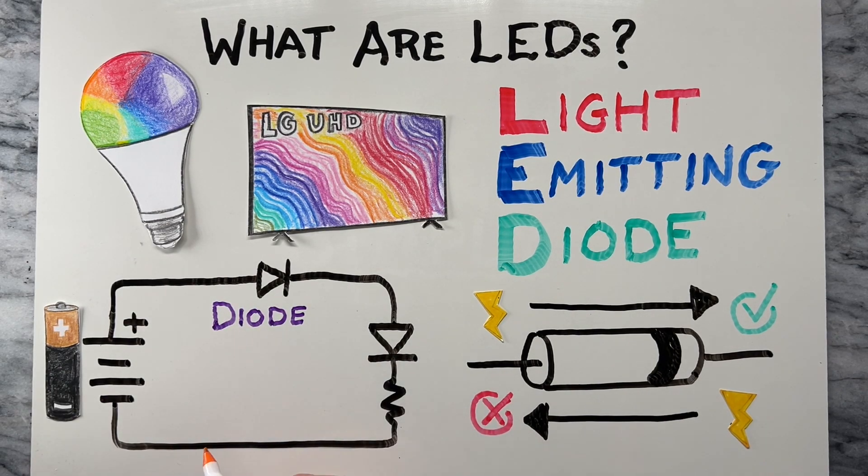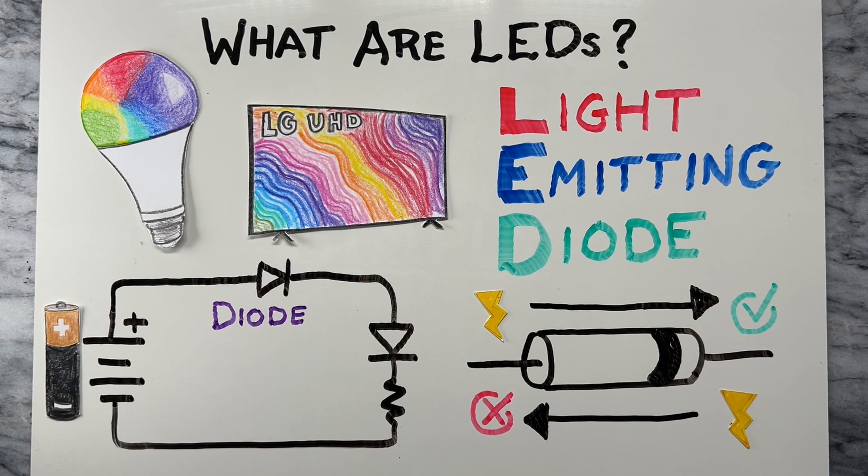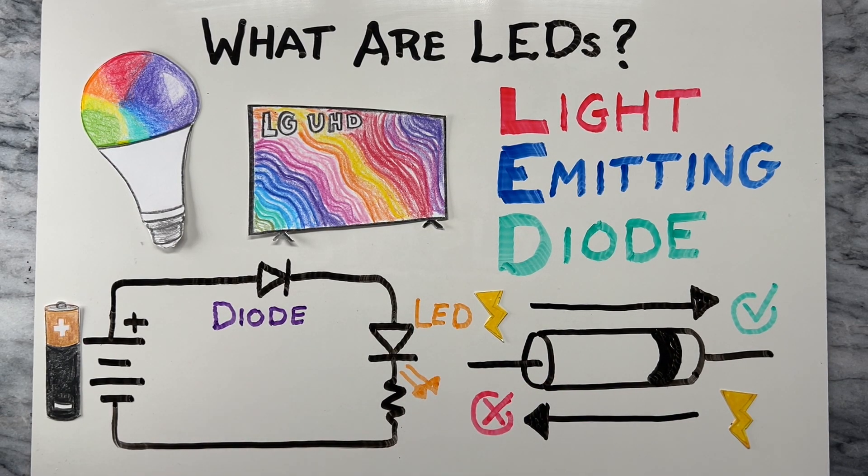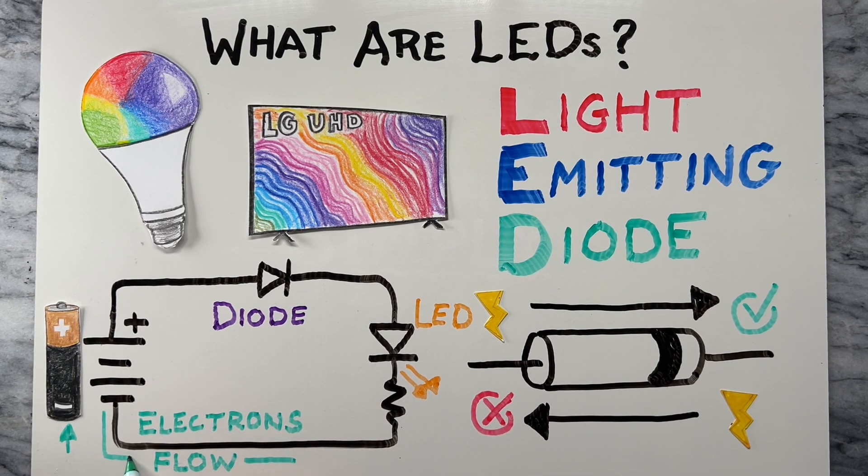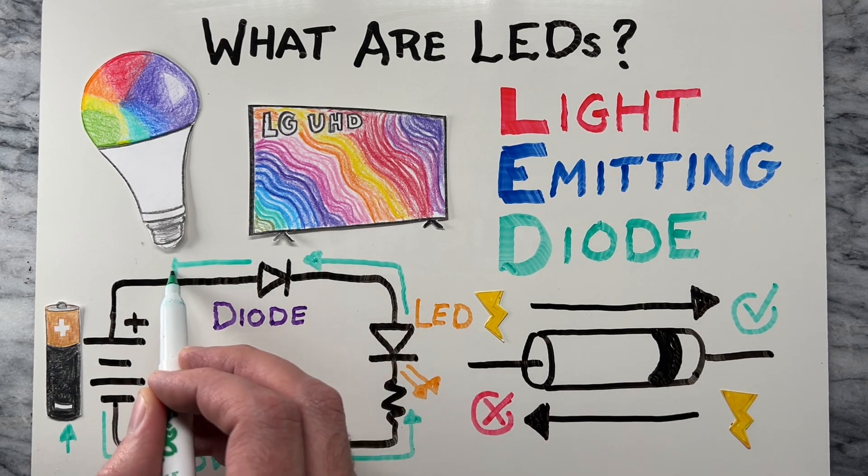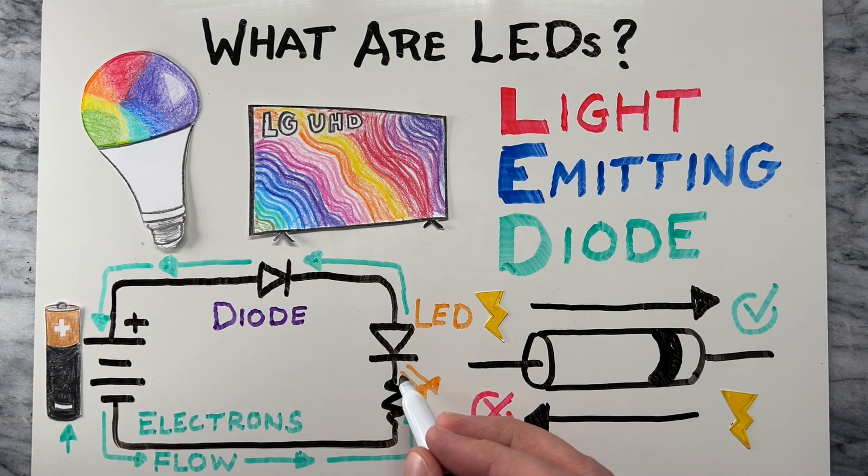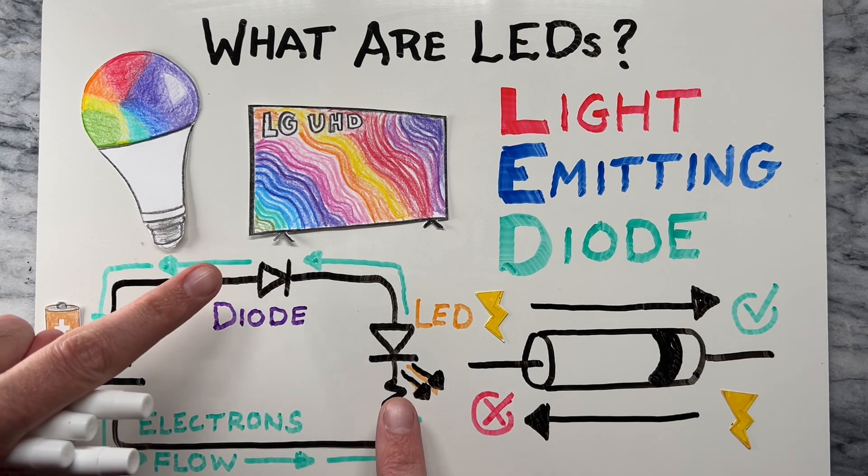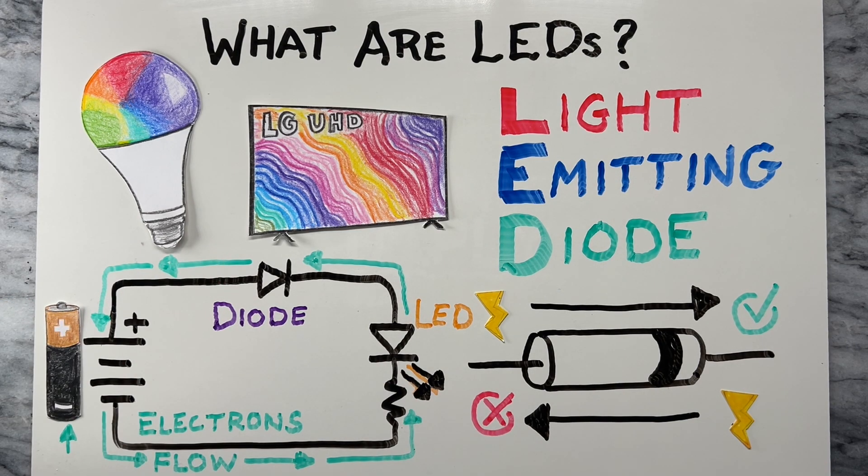So a light emitting diode, or LED, is a diode that, as the name suggests, emits light. Remember that in a circuit, electricity or electrons flow from the negative side of the battery and back to the positive. Also keep in mind that the diode symbol's arrows point against the direction of electron flow. Take a look at the symbol for an LED. It's the same as a diode, but with two arrows pointing away.